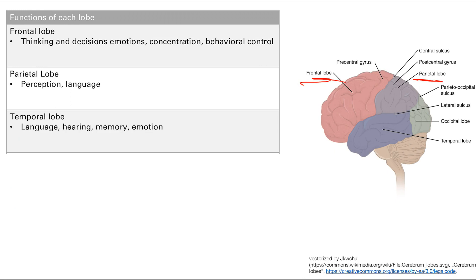For the temporal lobe, there's language, hearing, memory, emotion—especially language. Do you remember what was that language center in the temporal lobe again and what was its function? It's the Wernicke's area right here, and it's for understanding speech.